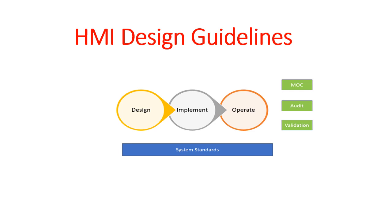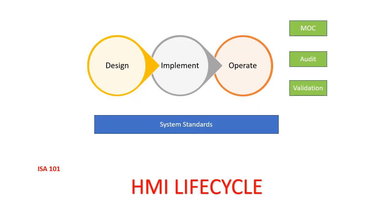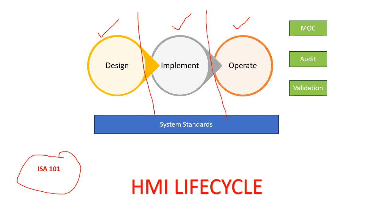In this particular lecture, we will be discussing that standard and how it provides guidelines about HMI design. The standard is ISA 101, and it provides guidelines about the HMI lifecycle. It has defined the lifecycle into three different phases: design, implement, and operate, and provides guidelines for each section. There is also a set of system standards that needs to be developed so that the same standard can be followed for all three phases of the lifecycle.